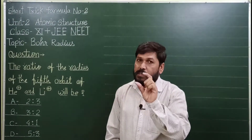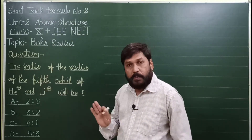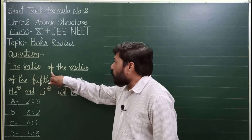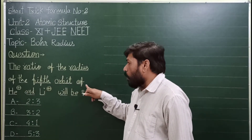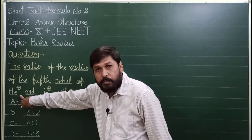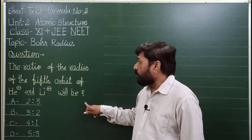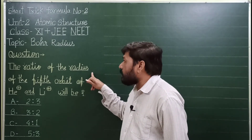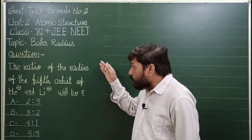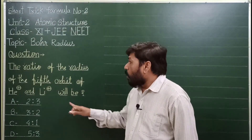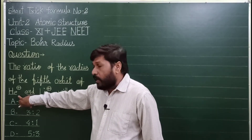I will show you both formulas in short form. This question asks for the ratio of the radius of the fifth orbit of helium positive (He⁺) and lithium positive (Li⁺) — the radius ratio of the fifth orbit in these two elements.